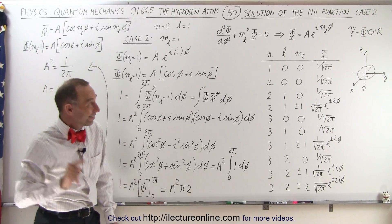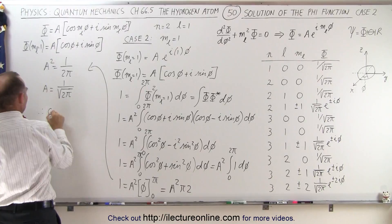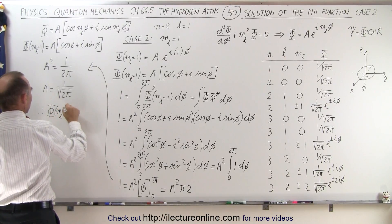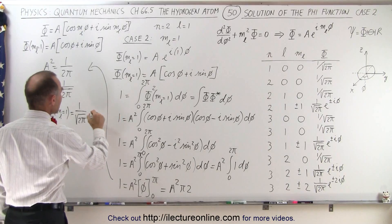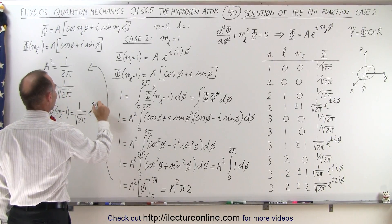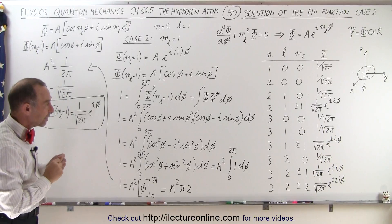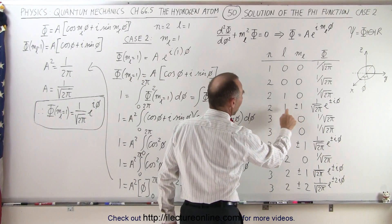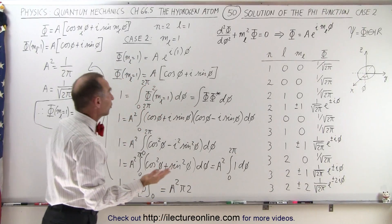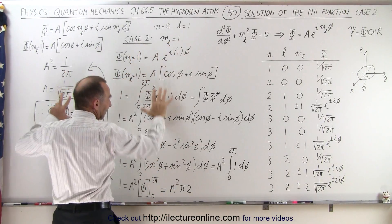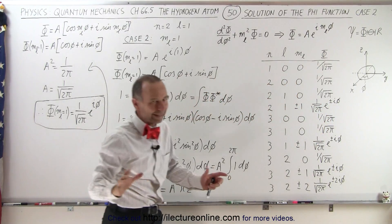Since m is not equal to 0 but equal to 1, we plug a 1 in. The function when m sub l is equal to 1 is equal to A — which is 1 over the square root of 2π — times e to the i times 1 times phi. This is the solution to the azimuth portion of the Schrödinger equation when m sub l equals 1, l equals 1, and n equals 2. The plus and minus in the solution comes from the possibility that m sub l is equal to negative 1; everything else stays the same, only the exponent sign changes.